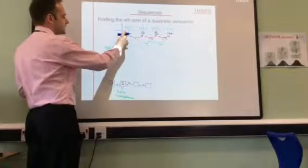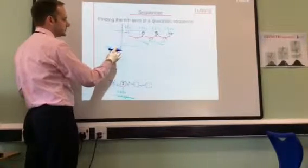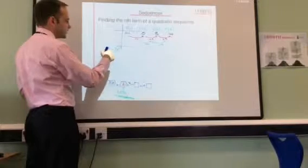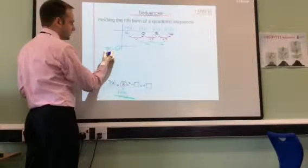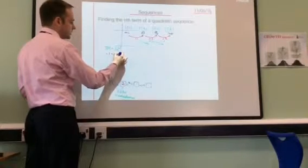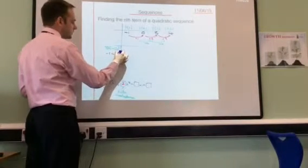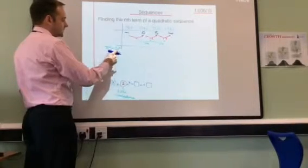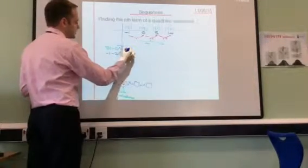We've got minus 1 minus 2 lots of 1 squared. Let's write it down. The term number, term 1 is minus 1. Take away 2 lots of n squared. 1 squared is 1, that's 2. Minus 1, take away 2, is minus 3.